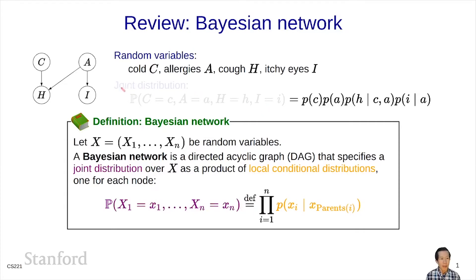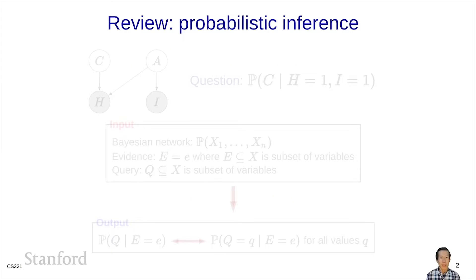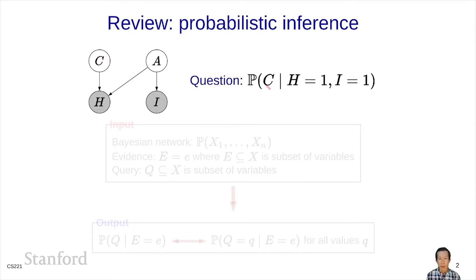In this case, we have a joint distribution over c, a, h, and i. So you can think of the Bayesian network as defining this joint distribution, which is a probabilistic database where you can answer questions. For example, what is the probability of c given h equals 1 and i equals 1?